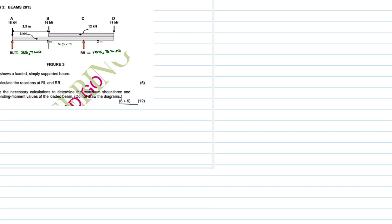We start on point A. For the shear force at A: a force acting upwards is positive and a force acting downwards is negative. The positive force is the reaction, which is 35.7 kN. We subtract the downward force of 18 kN. So the shear force at A equals 35.7 minus 18 = 17.7 kN.